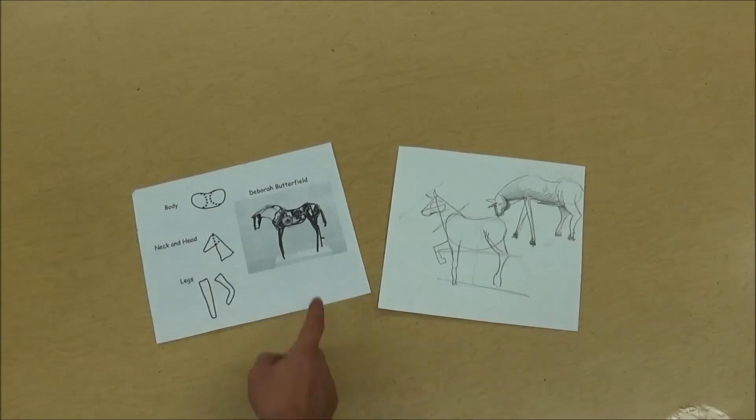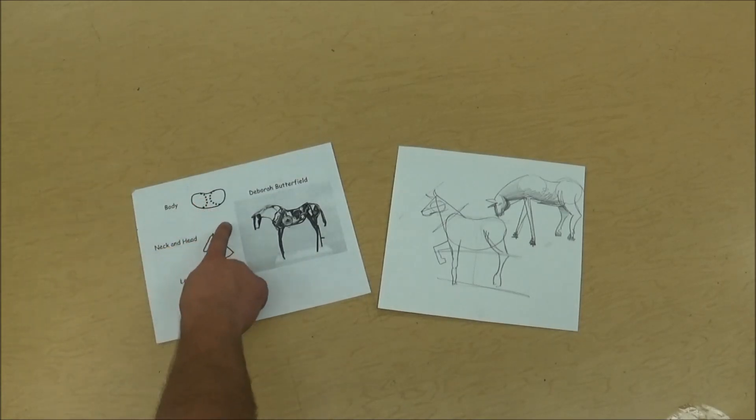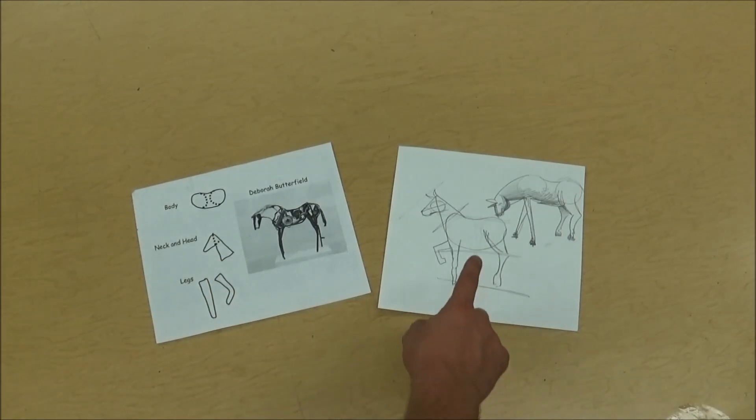So last class we talked about Deborah Butterfield's artwork. She always sculpts horses and horses are tricky to draw. So we talked about the shape of the body and the neck and the head and the legs and we practiced sketching those shapes.